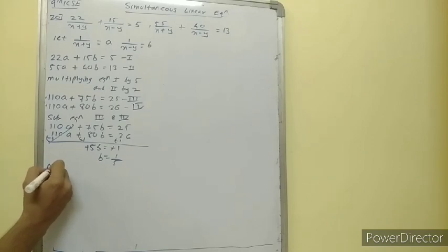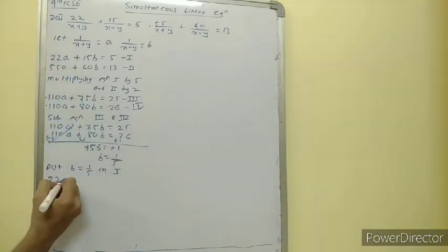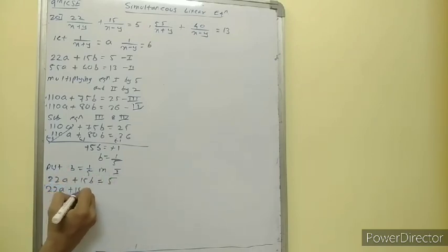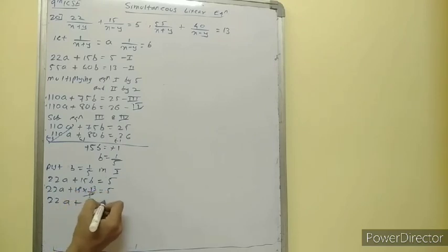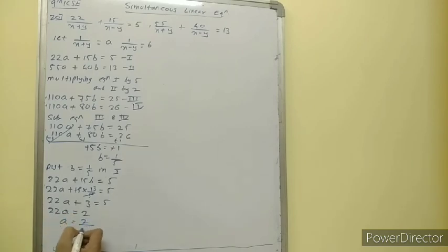Put b equal to 1 upon 5 in the first equation. What is the first equation? We have 22a plus 15b is equal to 5. So 22a plus 15 into 1 upon 5 is equal to 5; 15 upon 5 is 3. So we have 22a plus 3 is equal to 5; 22a is equal to 5 minus 3 is equal to 2. So a is equal to 2 upon 22, which is 1 upon 11.